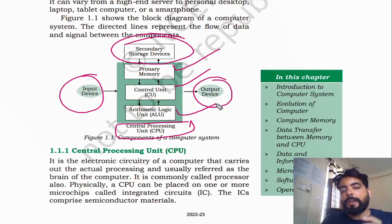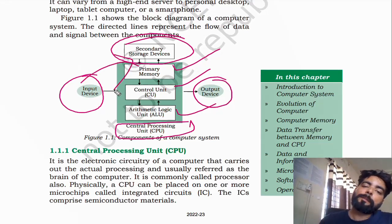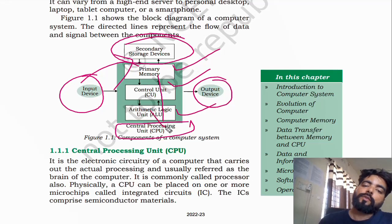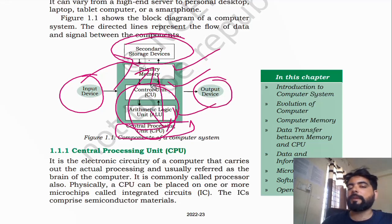First, the data from the input device goes and gets stored in primary memory. Whatever processing happens, the other parts pick up data from primary memory. After the result comes, they put it back into primary memory.